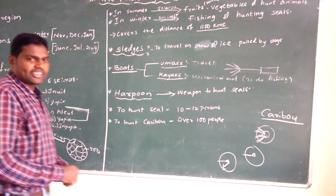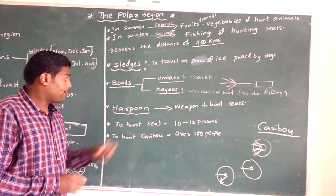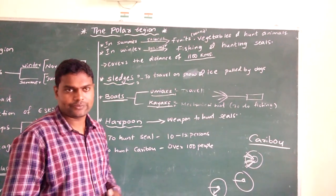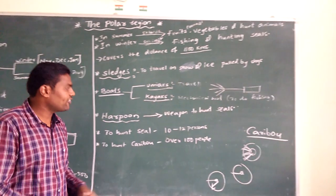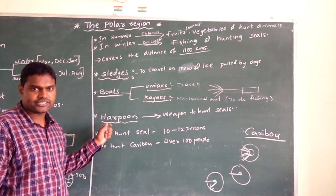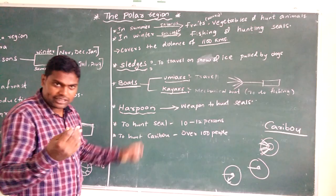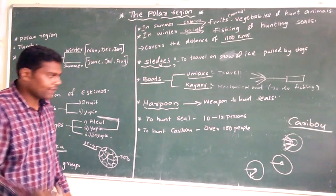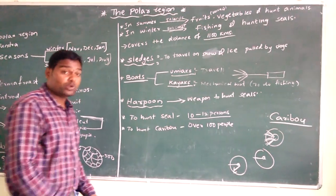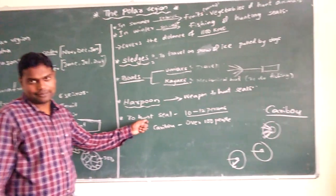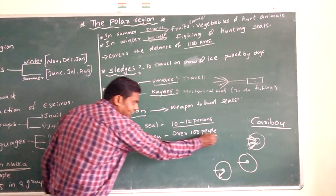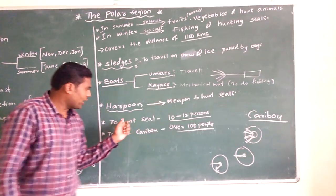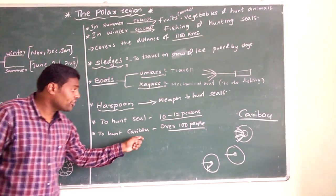Harpoon is a special weapon used to hunt and kill the seals. Now we have guns, knives, and swords, but Eskimos use a harpoon as their special weapon to hunt seals. To hunt a single seal, 10 to 12 persons are required. To hunt a caribou, approximately 100 people are required.